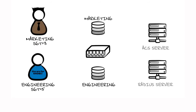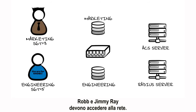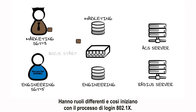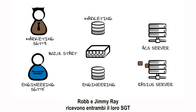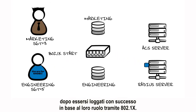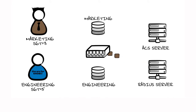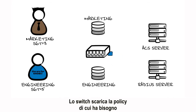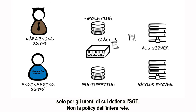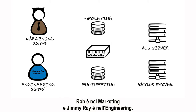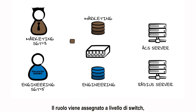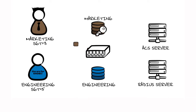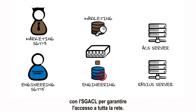Rob and Jimmy Ray need to access the network. Both have different roles, so they start their 802.1X login process. Rob and Jimmy Ray both receive their SGTs after a successful login based upon their role in the network. The switch downloads the policy that it needs only for the users it carries the SGT for, not the entire network policy. Rob's in marketing, Jimmy Ray's in engineering. The roles are enforced at the switch level with the SGACL to ensure access control is across the entire network.